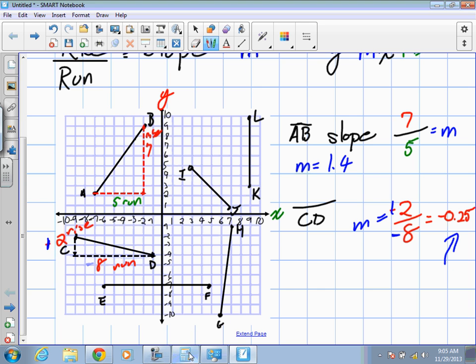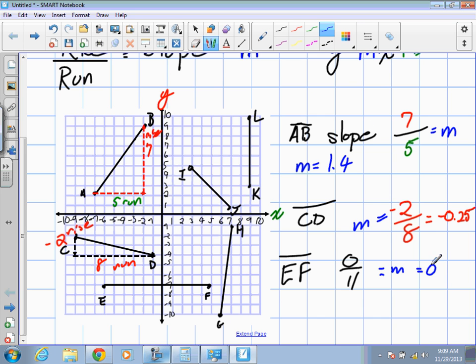So in our next line, EF. What is our rise going from E to F? Zero. Our rise is zero. And what is our run? Five, seven, nine, ten, eleven. So we have a run. So, our rise and run, what is zero divided by eleven? Zero. So we have no slope here. This is a horizontal line. So anytime we have a horizontal line, we're looking at a slope of zero.